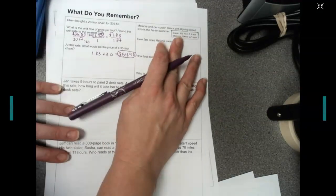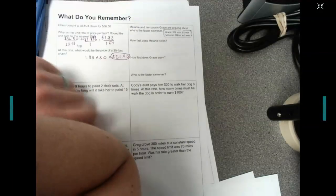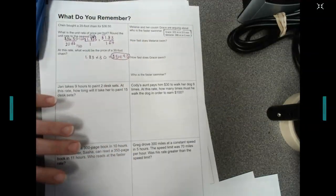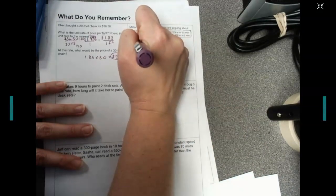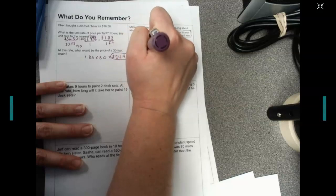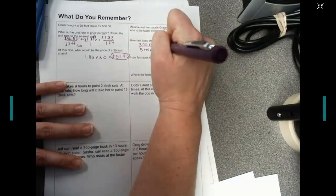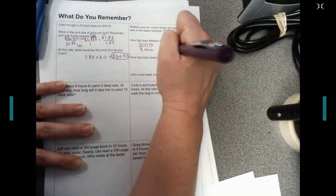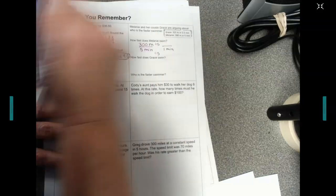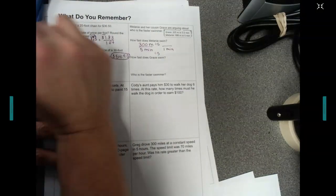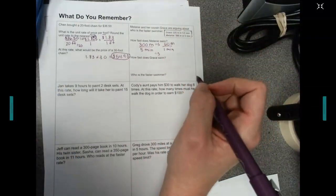Okay, let's look right here with Melanie. Melanie and her cousin Grace are arguing about who is a faster swimmer. How fast does Melanie swim? So I'm taking 300 meters over 5 minutes, and I'm going to take that down to 1 minute. I have to divide by 5. 300 divided by 5 is 60. So Melanie can do 60 meters in 1 minute.